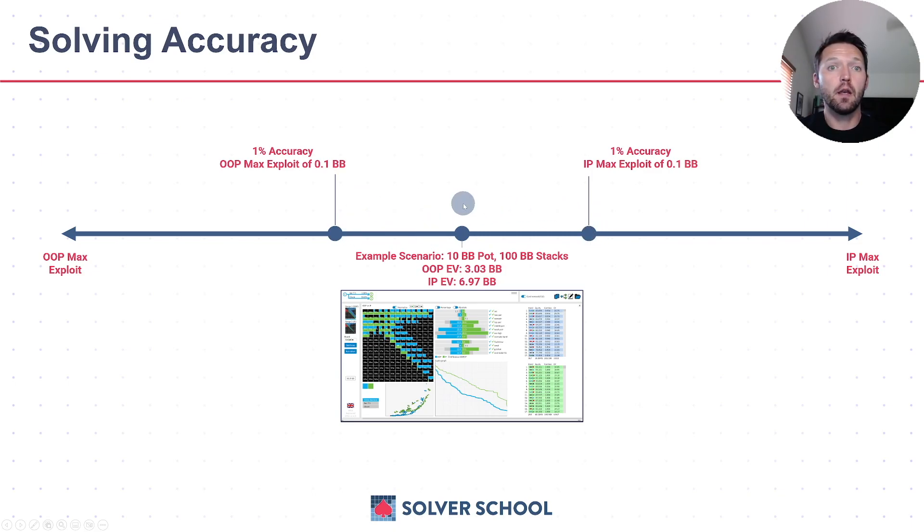We can extrapolate this further and say, what if we decreased our accuracy? What if we wanted within 3% accuracy? In that case, we're saying that we're okay with the in-position or out-of-position player exploiting the other player for up to 3% of the pot or 0.3 big blinds. If we wanted to get even more accurate, we could get down to 0.1% accuracy or even more accurate than that if we chose to. That would reduce this max exploit to 0.01 big blinds on either side.